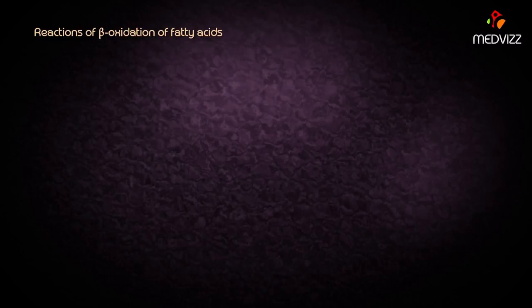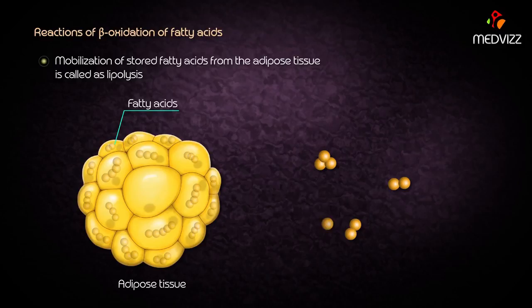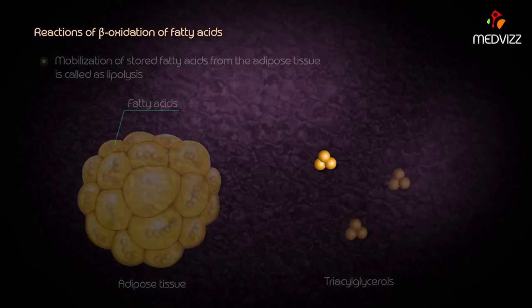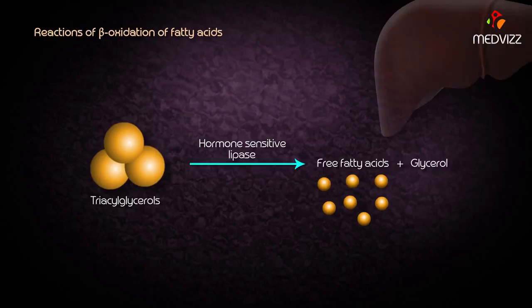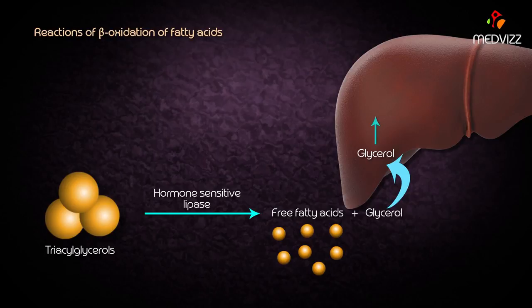In the first step, mobilization of stored fatty acids from the adipose tissue is called as lipolysis. These mobilized free fatty acids, also called as triacylglycerols, are stored in adipose tissue and hydrolyzed to free fatty acids and glycerol with the help of hormone sensitive lipases. The glycerol released during the lipolytic process is transported to the liver, phosphorylated into glycerol-3-phosphate by glycerol kinase, and used as a substrate for gluconeogenesis.